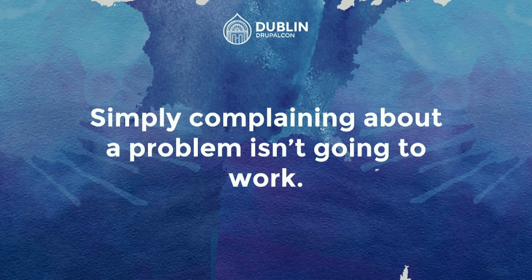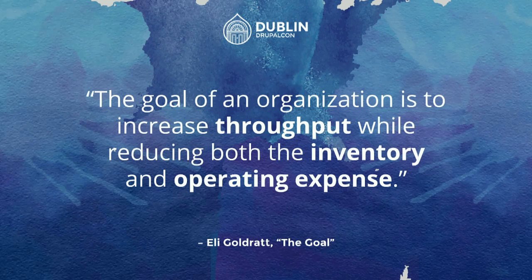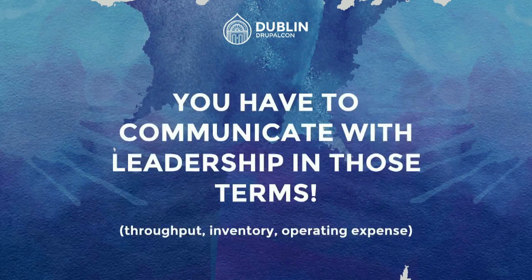So this set of information is probably the most important out of the whole presentation, so take note. Complaining about a problem isn't going to work. There's a book by Eli Goldratt called The Goal, and from that book there's this quote: 'The goal of an organization is to increase throughput — the rate of features or widgets going through the system to the customer's hands — while reducing both the inventory and operating expense, the cost of doing business.' So you have to communicate with leadership in these terms: throughput, inventory, operating expense. If you can't convey your message in these terms, you're not making it very easy for them to listen, because these are the guys that look at spreadsheets all day.